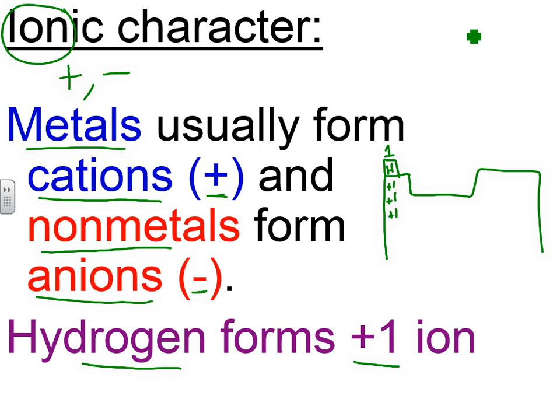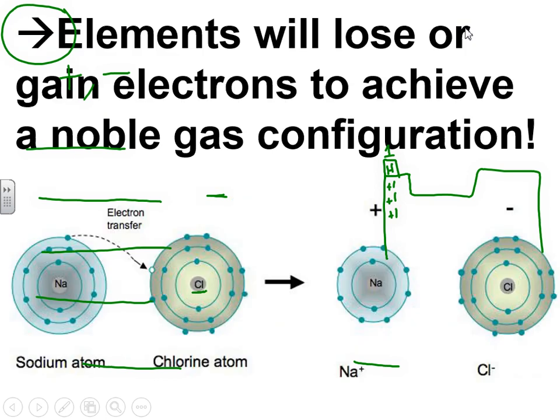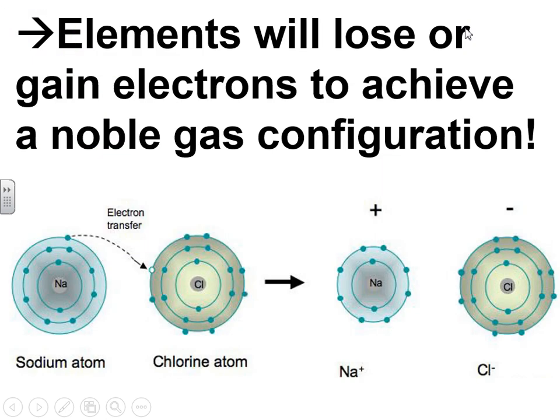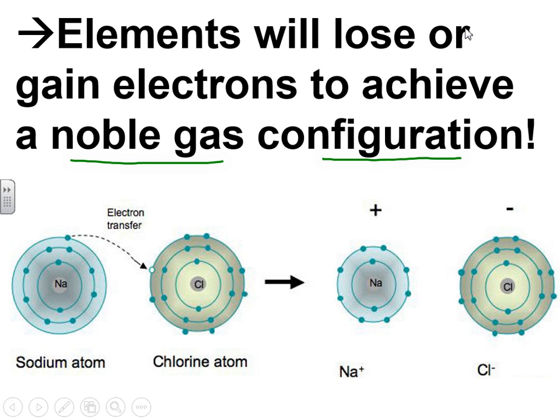Now, hydrogen can actually do both, but most of the time it'll be a plus 1 ion. And this is why hydrogen is oftentimes placed above group 1. All the rest of group 1 form a plus 1 charge, and hydrogen forming a plus 1 charge also fits with the alkali metals. So that's why it is oftentimes placed along with the alkali metals.